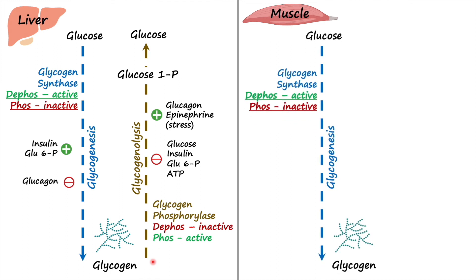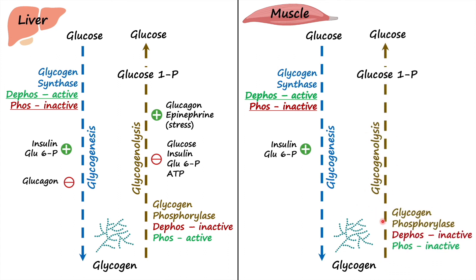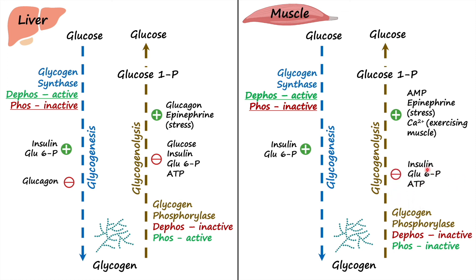In muscle: during the fed state, increased levels of insulin and glucose-6-phosphate upregulate glycogenesis. For glycogenolysis in muscle: during the fasting state, increased AMP — an indicator of energy deficiency — increased epinephrine, and increased calcium from exercising muscle all upregulate glycogenolysis, whereas during the fed state, increased insulin, glucose-6-phosphate, and ATP inhibit glycogenolysis.